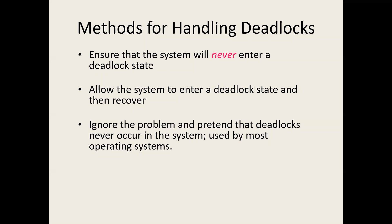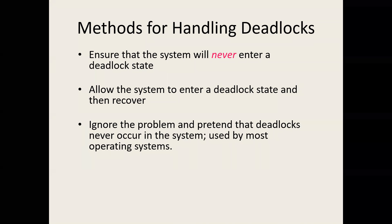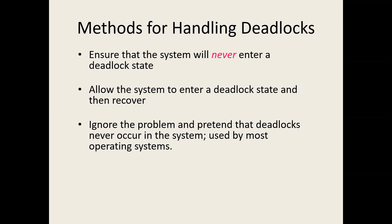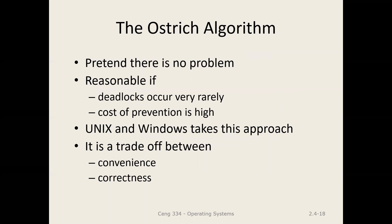The operating systems do not use the first or second options — they use the third option. The third option is good if deadlocks occur very rarely. Operating systems assume deadlocks occur very rarely, ignore the problem, and if a deadlock happens, then try to recover from it. This algorithm is called the Ostrich algorithm.